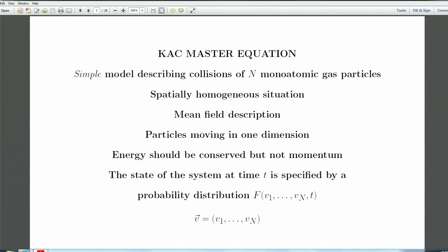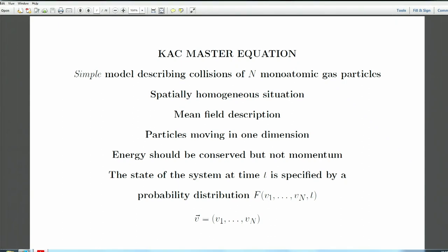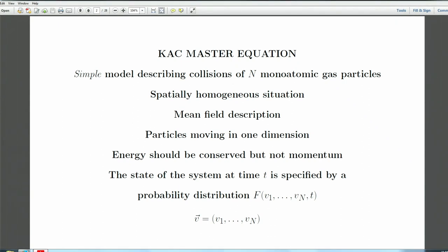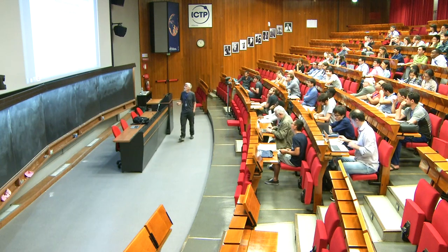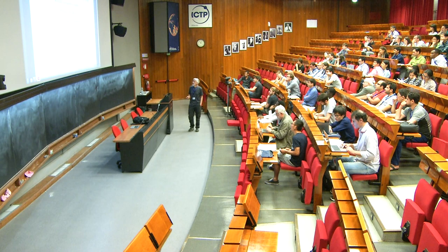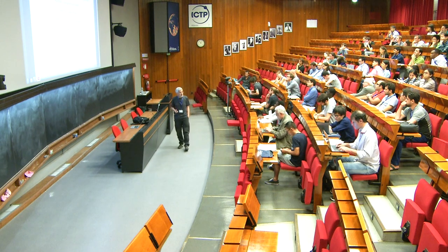In one dimension, you have an interesting conundrum because you would like to conserve energy and momentum. But when particles collide in one dimension with both conserved, either they go through each other keeping their velocities, or they exchange them — and not much interesting can go on. So what we decide is: we will conserve energy and we do not care about momentum.